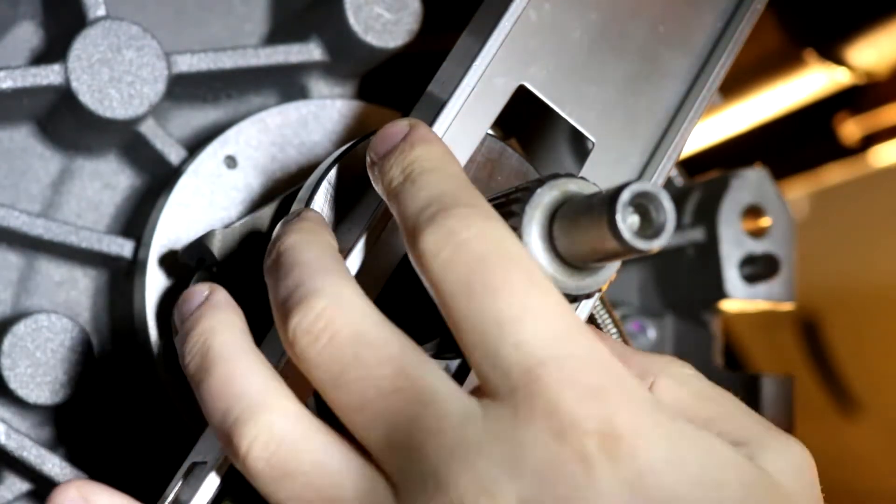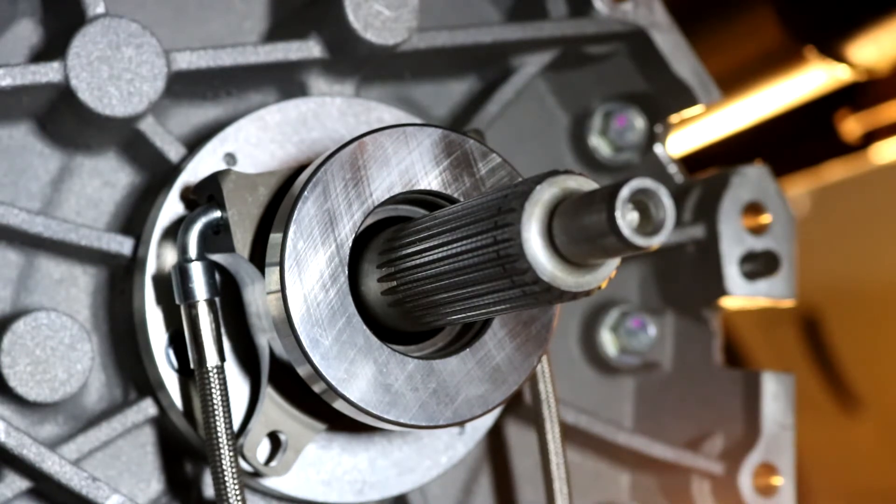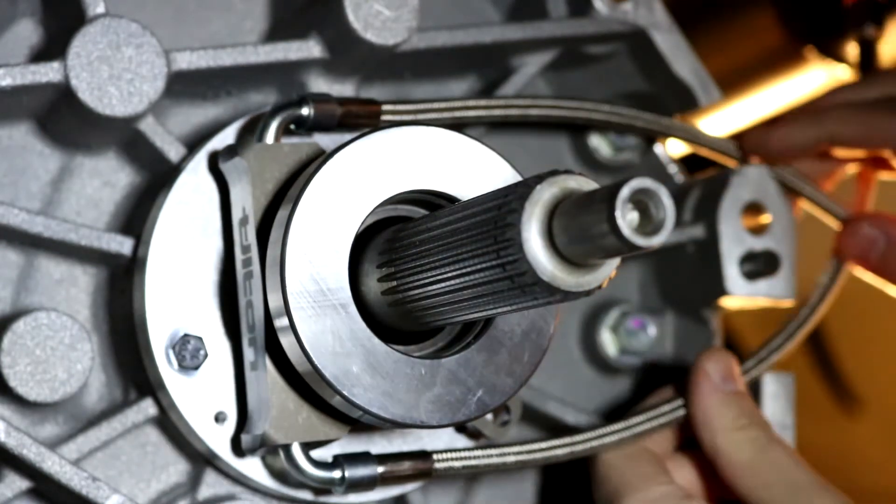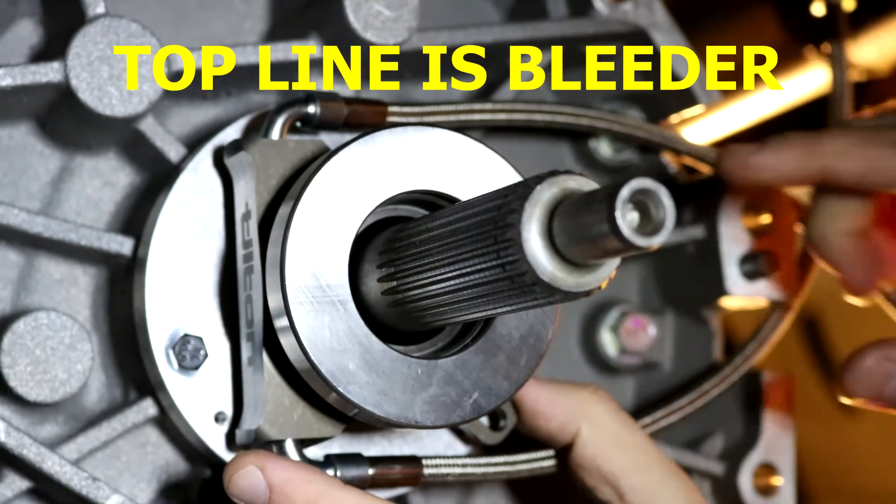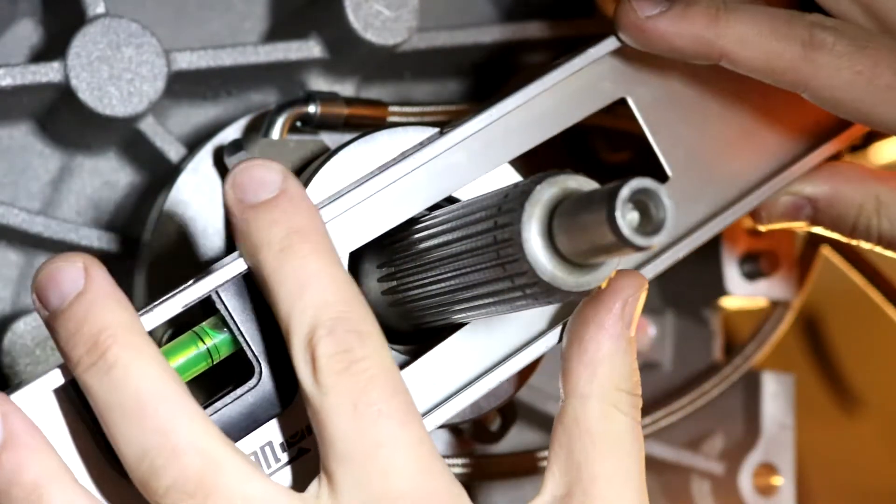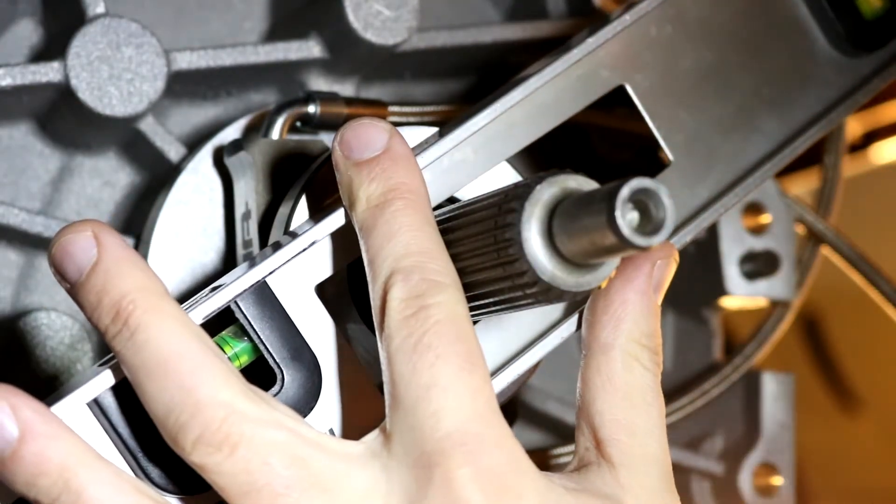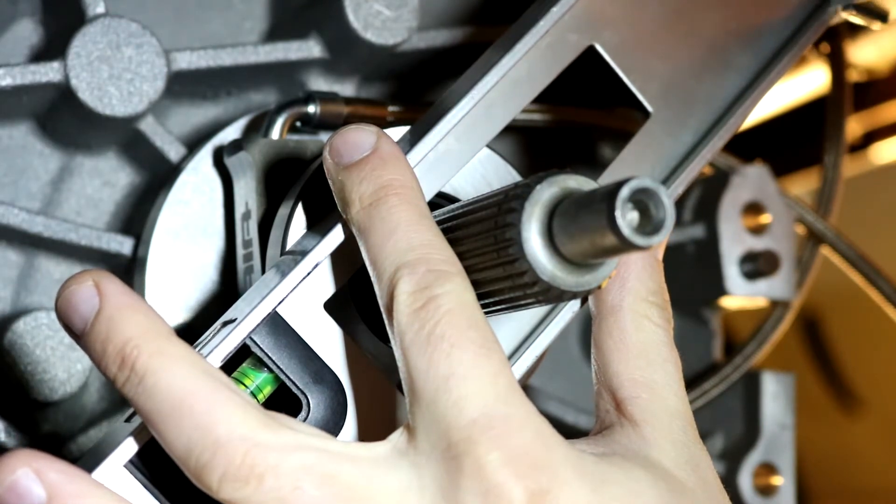Once you have the release bearing threaded onto the correct install height, you just want to orientate the lines so they feed through your slots in the transmission and bell housing. I'll do a final check with my measurement and it looks like we are virtually dead on.